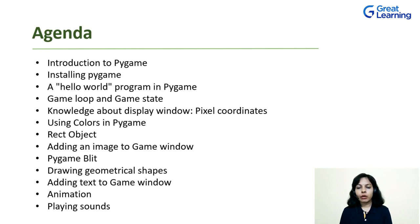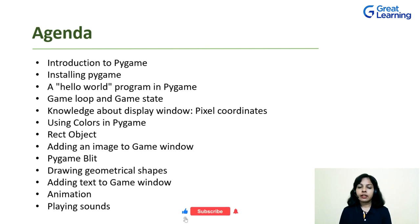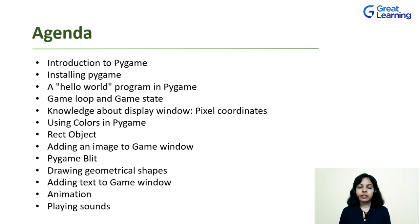Then we will talk about the display window. The display window consists of pixel coordinates, so all the details about pixel coordinates will be discussed in that section. Moving ahead, how to use colors in Pygame and also how to use the rect object to draw rectangles will be discussed. Without adding an image to any game, the development of a game is incomplete. So we will talk about how to add an image to a game window, and also Pygame blit, which is a function related to images. Then we will talk about all the geometrical shapes — square, rectangle, ellipse, polygon — and how to draw these in Pygame.